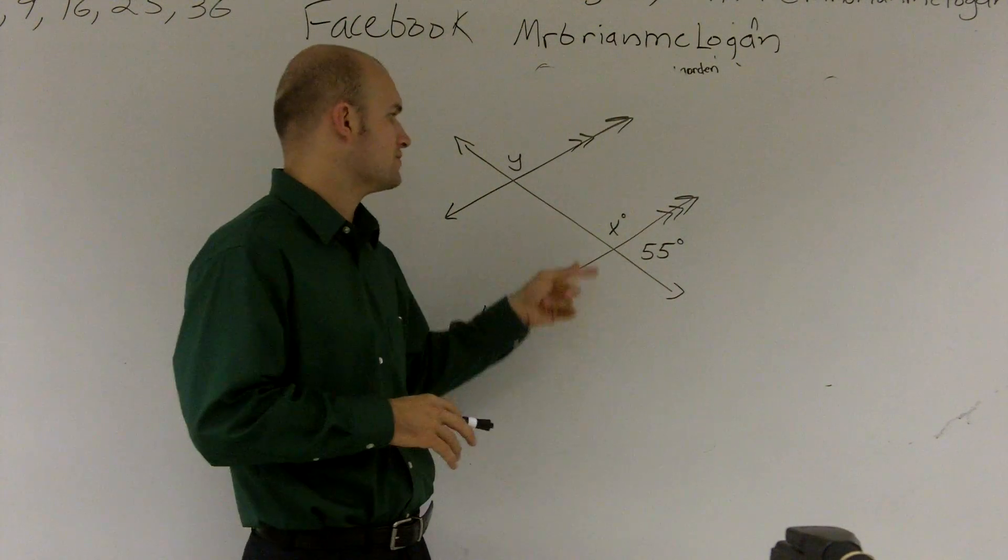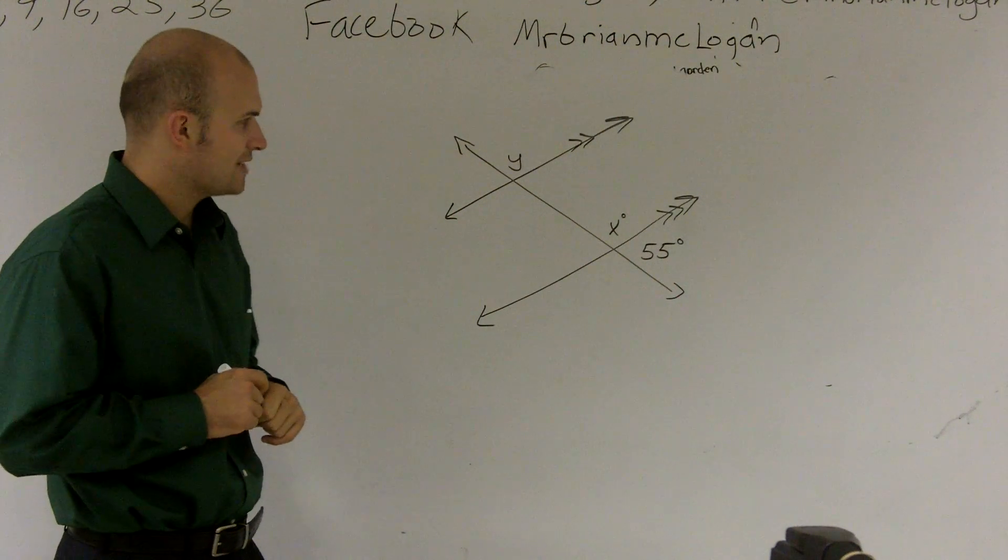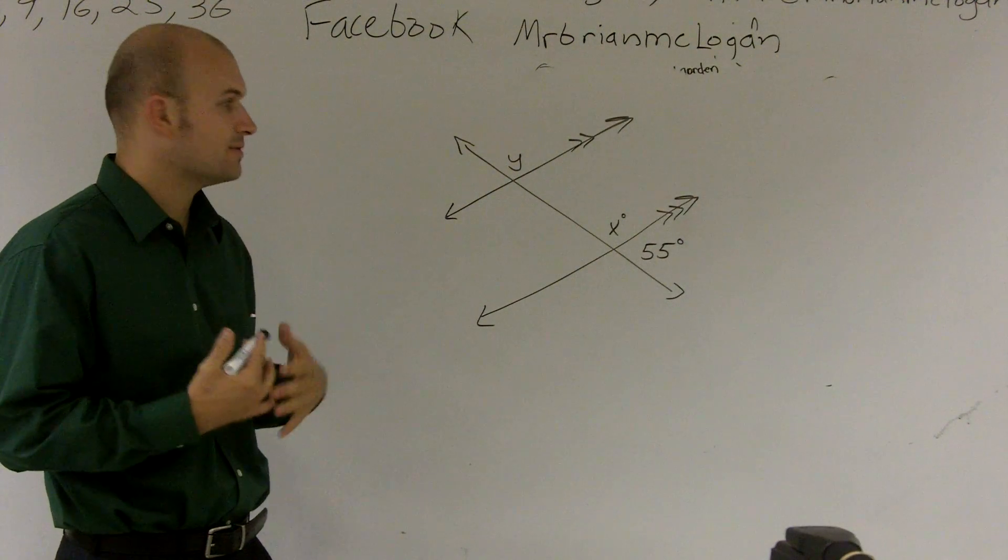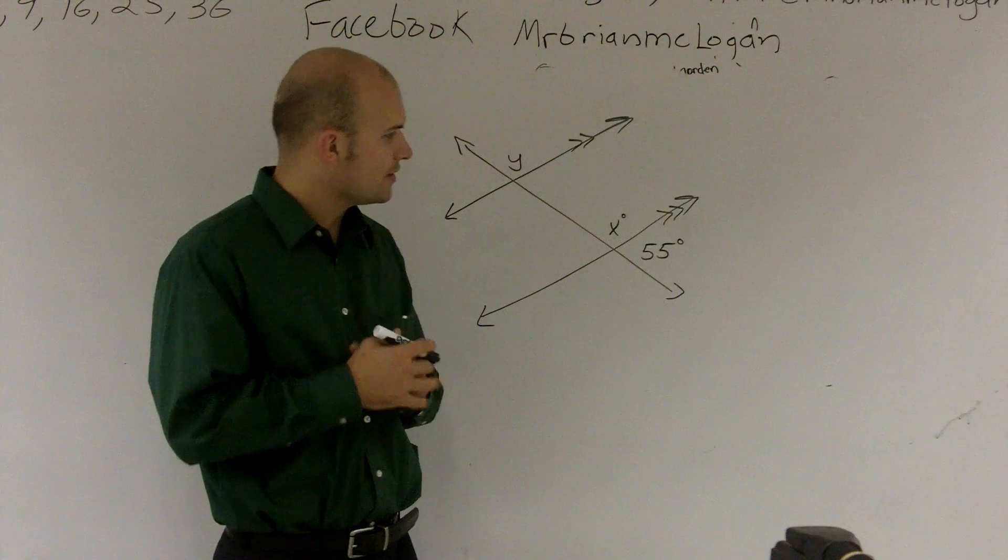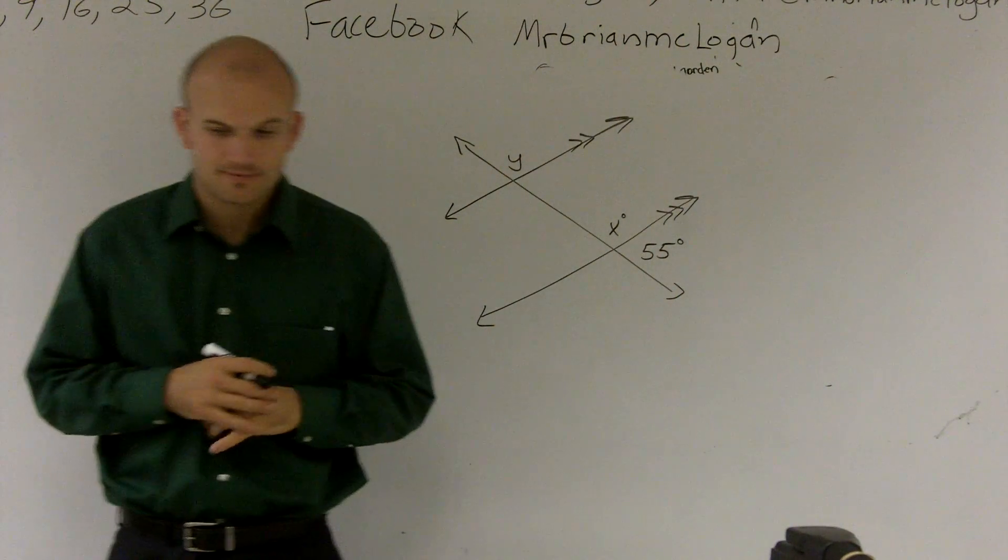Now, what we have is we have two unknowns. We have an angle x and we have an angle y, that we do not know the value of them. The only angle we know is our angle 55 degrees right here.